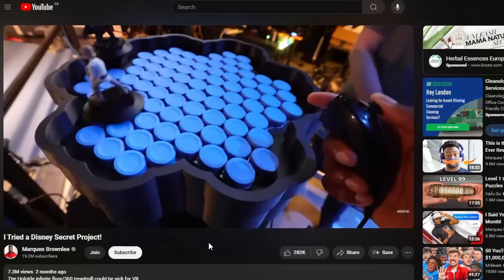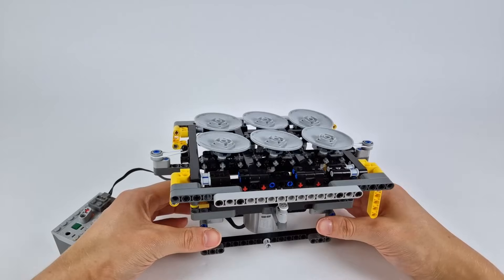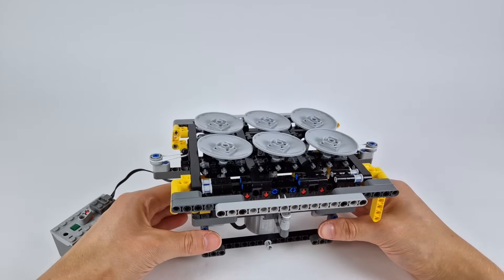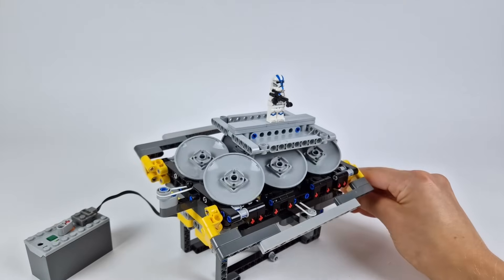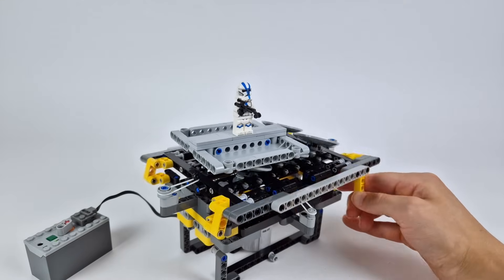A while ago, I saw a video about a type of omnidirectional treadmill that uses tilting discs to move an object on top of it in any direction, depending on what part of the discs are in contact with the object.